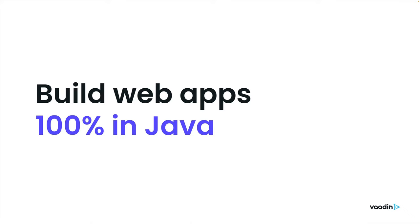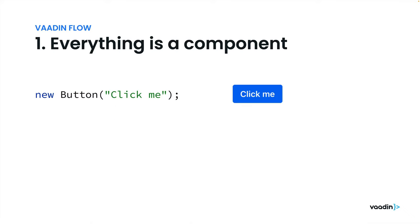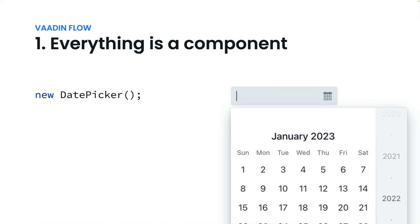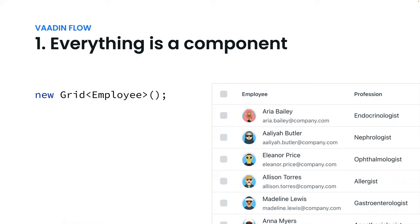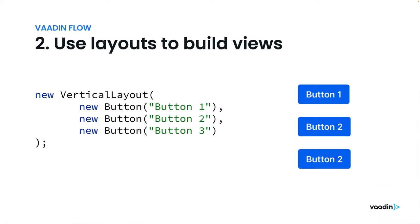VottenFlow is a framework for building web apps fully in Java. Everything is a component, so if you need a button, you instantiate a button. If you need a date picker, you instantiate a date picker. And if you need a grid, you instantiate a grid. And so on and so forth — we have tons of these components.